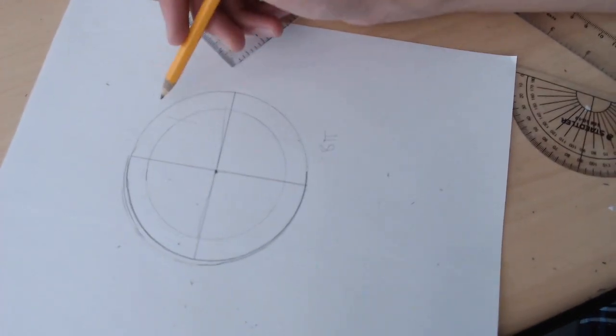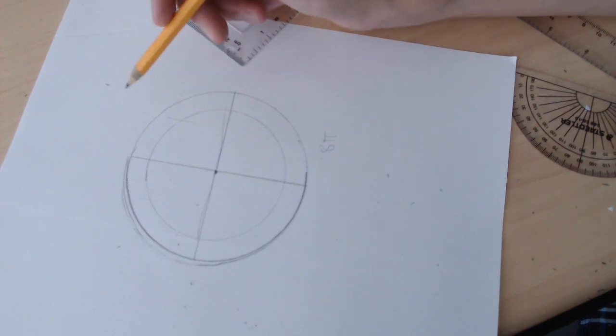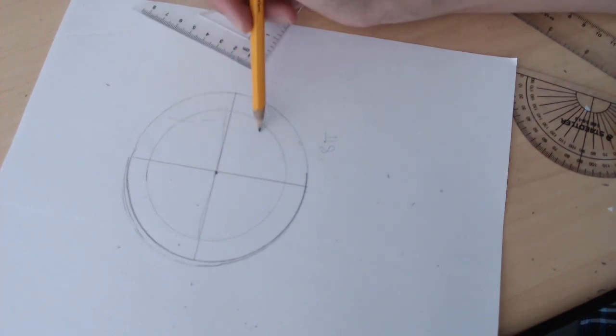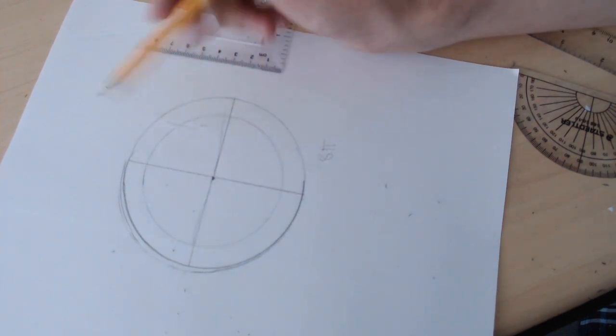So that means 24 divided by four, we could have six teeth in each of these quadrants.